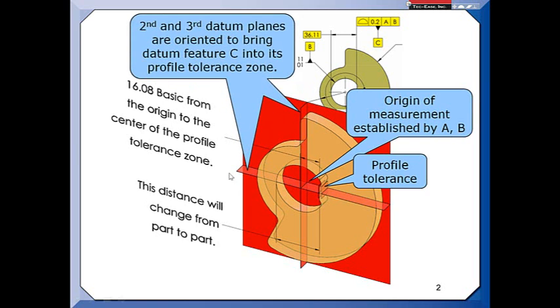Now my second and third datum planes are free to rotate since we've only referenced A and B. In fact, the feature we're trying to control here, you see, is datum feature C, but that's okay.